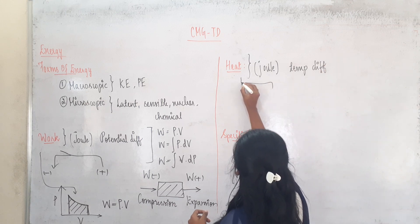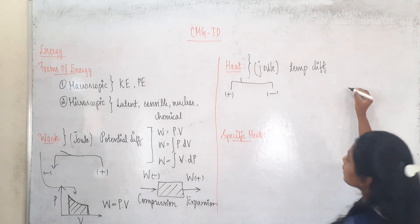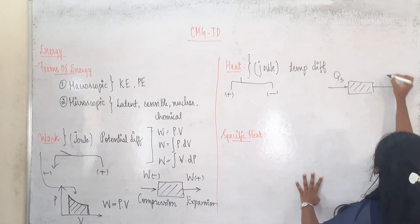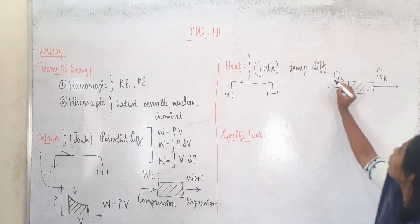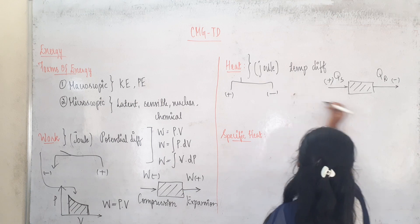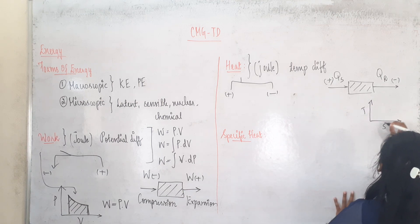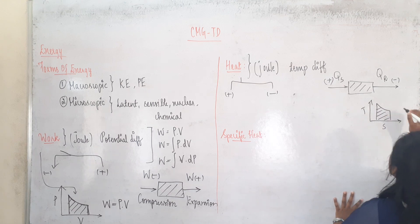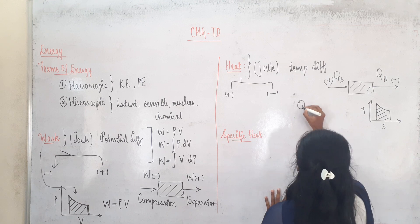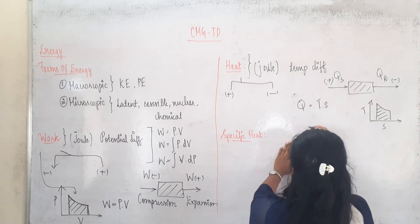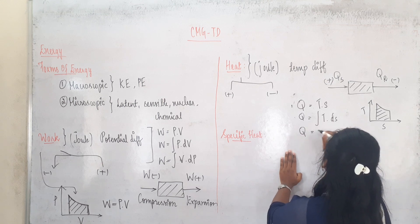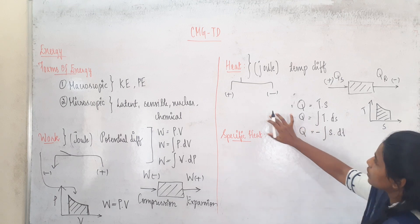Heat is the energy obtained due to temperature difference. Heat is of two types: positive and negative. When we consider the system, heat will be supplied to the system and heat will be rejected by the system. Heat supplied is positive and heat rejected is negative. When we draw a graph between temperature and entropy, T and S, the area under the TS graph is called heat. The formula for heat is Q = T·S, and Q = integral of T·dS, and Q = minus integral of S·dT.